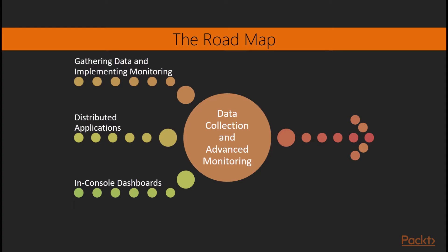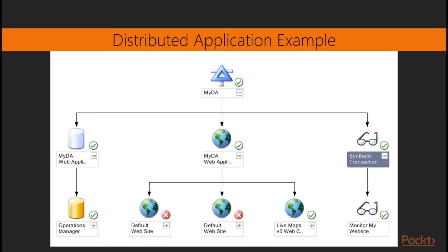Section five is about distributed applications, because individual monitors are fine, but we need to pull that information together into a distributed application, which gives us an overview of either the application or perhaps our entire environment as a whole. When we can see things like the database, the application, the middleware, the web services, as well as the network all in one place, we can get to faster resolution by seeing where our problem lies. This was a tough subject for me initially, so I really wanted to cover it.